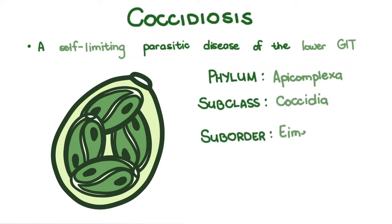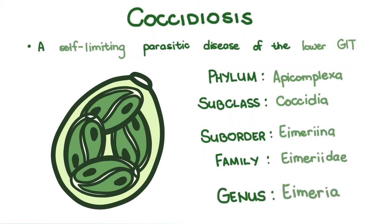Suborder Eimeriina, family Eimeriidae. The genus Eimeria is of importance in poultry species.